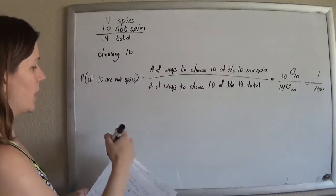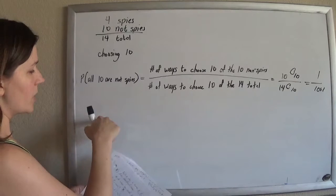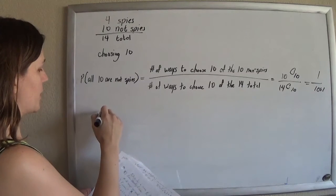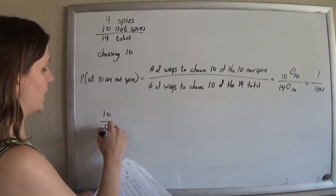The old school way of doing it was to say, the first guy I want to be a non-spy, so there are 10 out of 14 ways to do that.